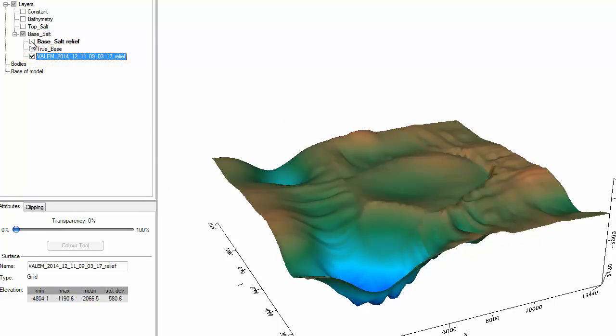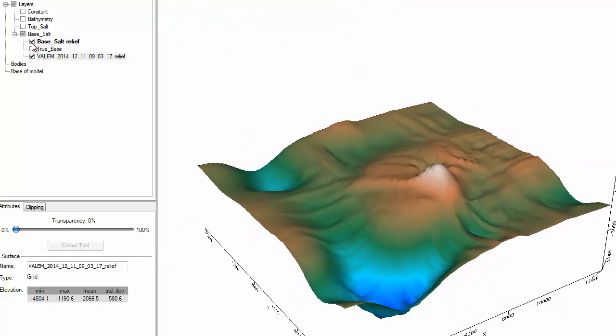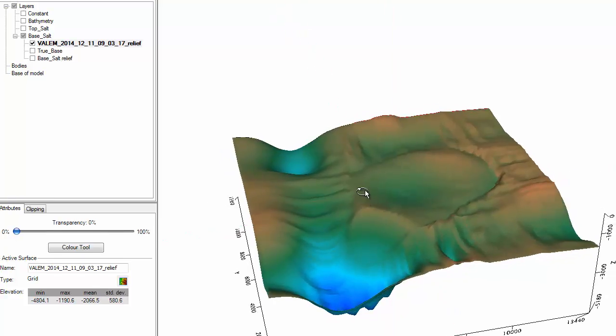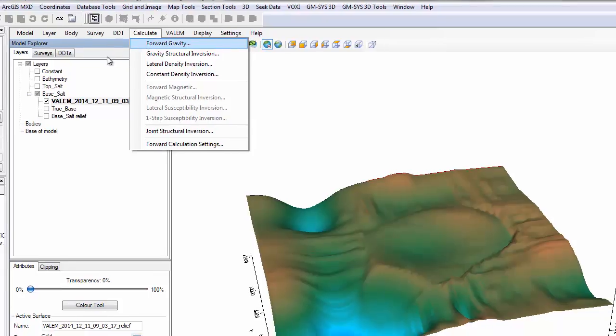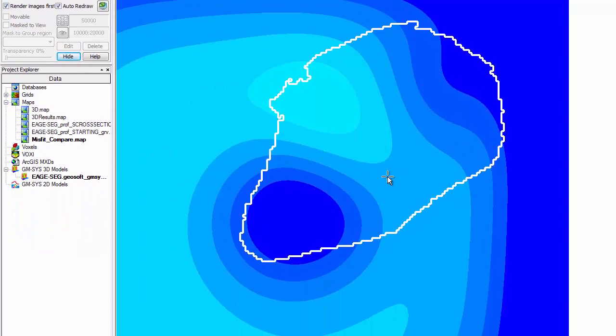Once the inversion is uploaded, you are free to work on other projects, close OASIS Montage, and even shut down your computer. The next time you open your GM-Sys3D model, the inversion result is added to the model space as an alternate relief surface. You can compare the starting model layer to the recovered layer by switching between them in GM-Sys3D. Here was the base of salt prior to the inversion. It was equal to the top of salt surface and therefore represented a zero salt thickness. Here is the base of salt after the inversion. To validate that the inversion result improved my overall model, I can make it the active relief surface and perform a forward calculation to observe the change in my misfit. I have prepared a map here that shows the misfit grids before and after the Valum inversion.